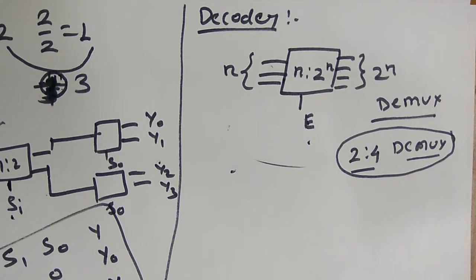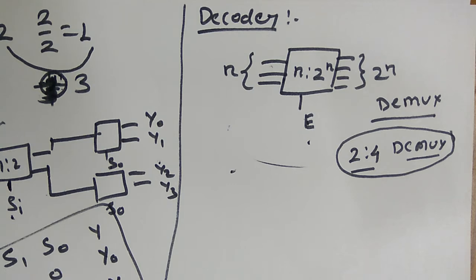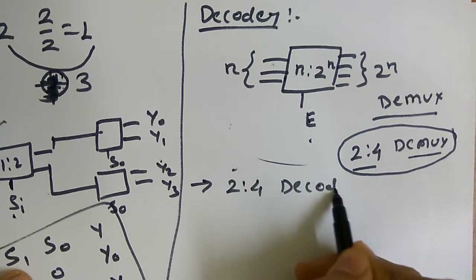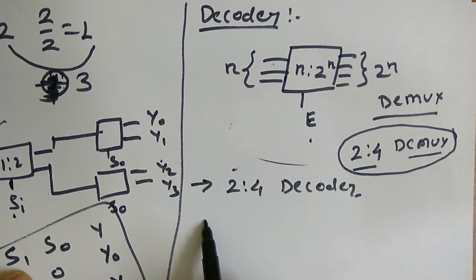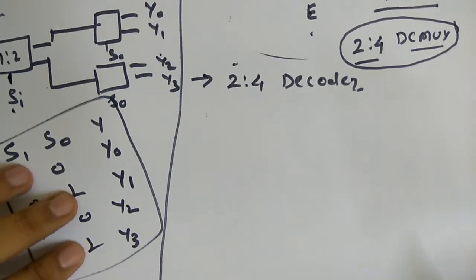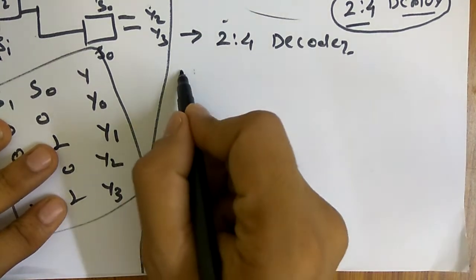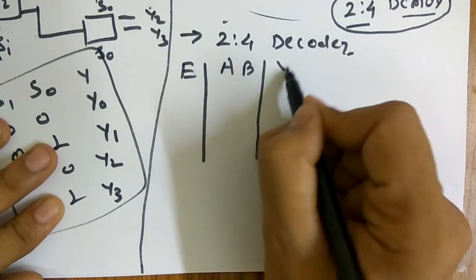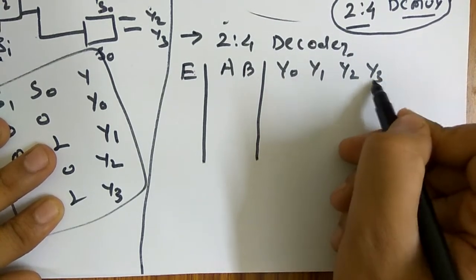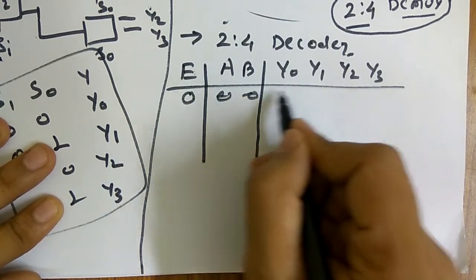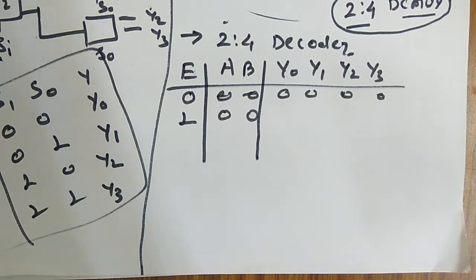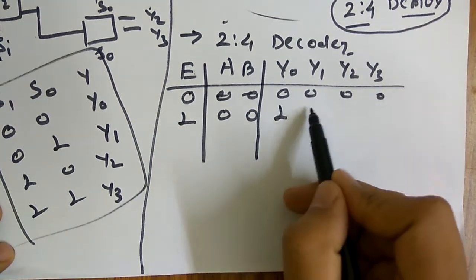We will see the 2-to-4 decoder. Here we have an enable input, 2 inputs A and B, and 4 outputs Y0, Y1, Y2, Y3. The truth table: when enable is 0, all outputs are 0. When enable is 1 and A=0, B=0, then Y0 is 1 and all others are 0.